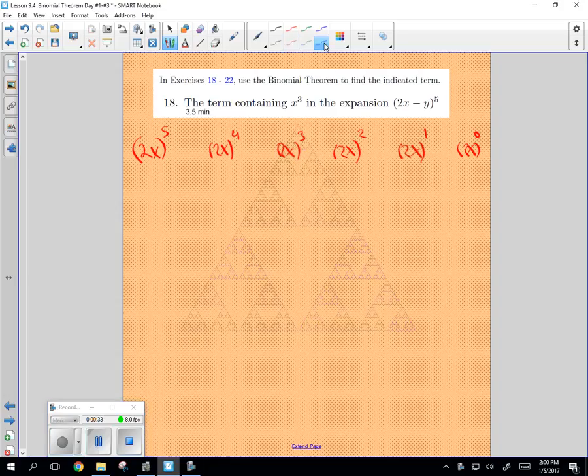Then I'm going to take the negative y to the 0, negative y to the 1, negative y squared, negative y cubed. Notice all the powers add up to 5. Now we need to put those values in.